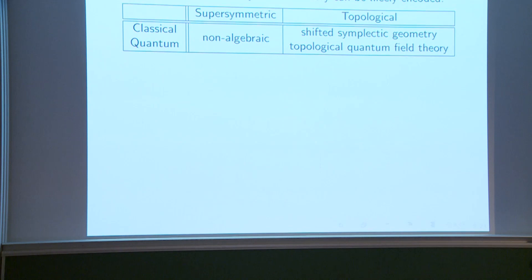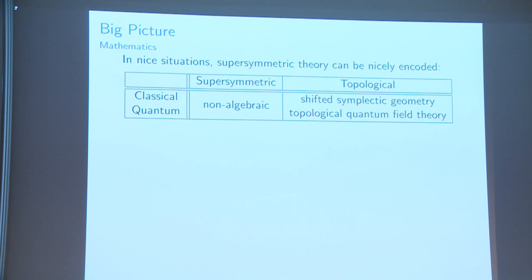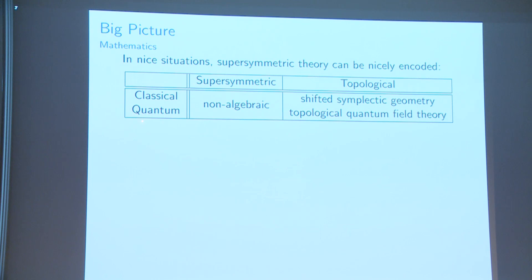What I mean by twisting and quantization is precisely captured by fitting into a certain table: from classical supersymmetric field theory, twisting goes in one direction and quantization goes in another. Our interest is to understand the relation to geometric representation theory, which is mostly algebraic — whereas supersymmetric field theory starts with differential geometric data, from which it's hard to extract algebraic information directly.